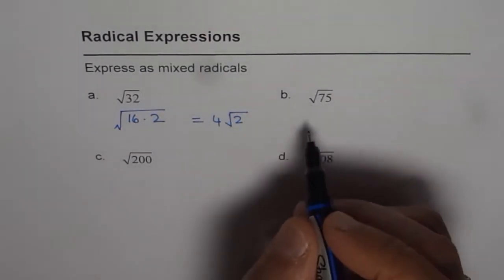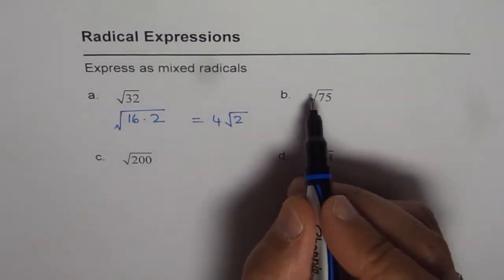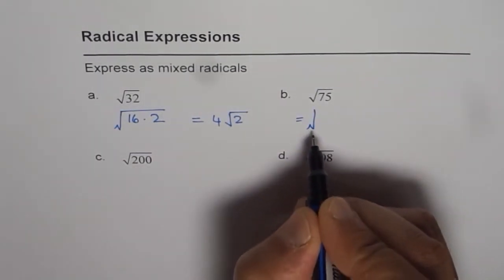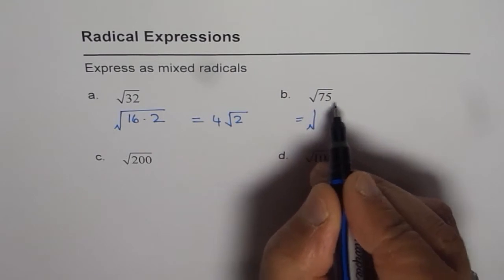Do you see the technique? Let us apply it once again. This time on square root of 75. Now square root of 75 can be written as 25 into 3.